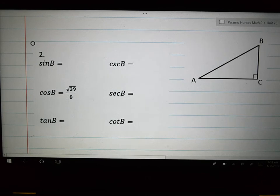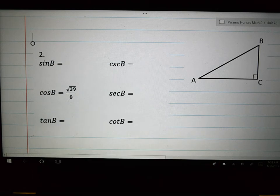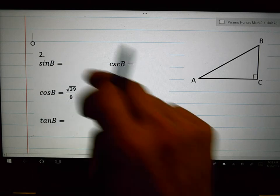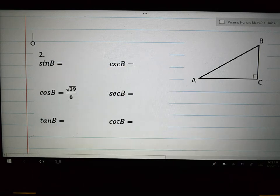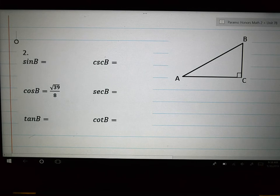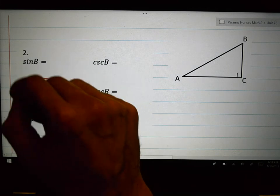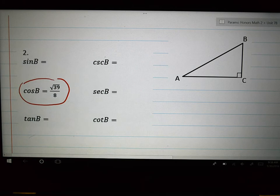This is what number two looks like. You're given six things. You have to find five of them and only one of them is given for you. But you're given a picture. And so we're going to have to do this problem with only one starting point. And this is your starting point. You know that the cosine of B is root 39 over 8.